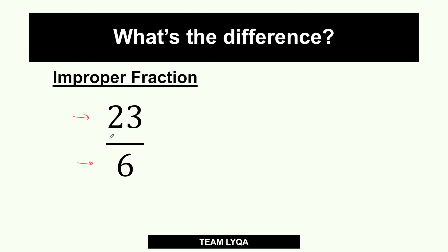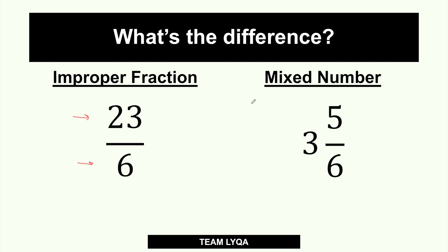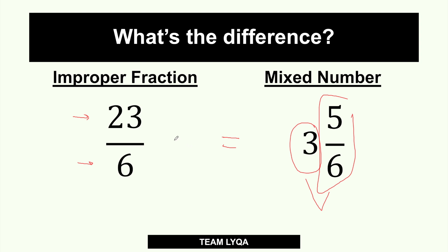Now, what does that mean? In exams, the options are usually not given in improper form — they're usually given as a mixed number. A mixed number looks like this: it has a whole number and a fraction. It's a mix of two types of number forms, hence 'mixed number.' However, if you look closer, 23 over 6 and 3 and 5 over 6 are actually the same fraction.